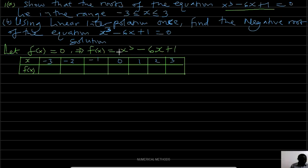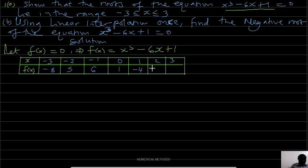Evaluating the function at each point: f(-3) = -8, f(-2) = 5, f(-1) = 6, f(0) = 1, f(1) = -4, f(2) = -3, f(3) = 10.